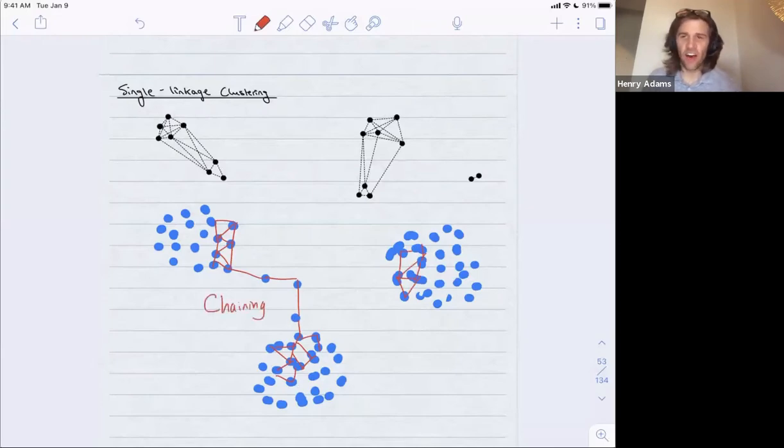And how this arose was that in single-linkage clustering, when we were deciding whether to connect, say, this data point with this cluster, we only looked at the minimum distance between this data point and any point in this entire cluster. We only looked at this distance.